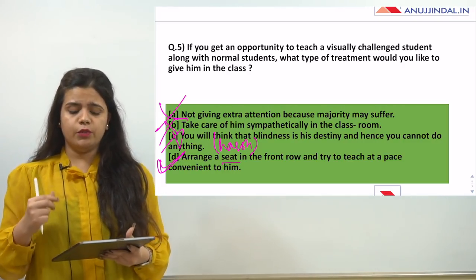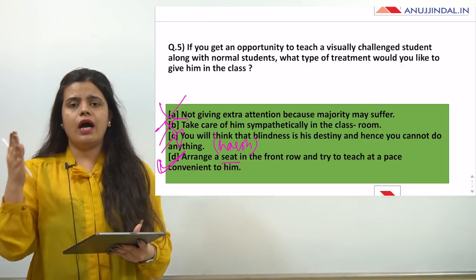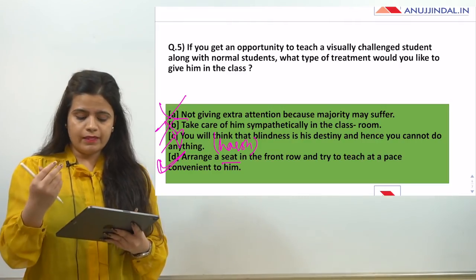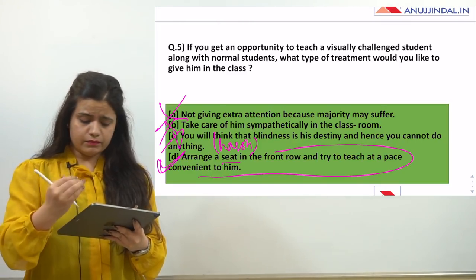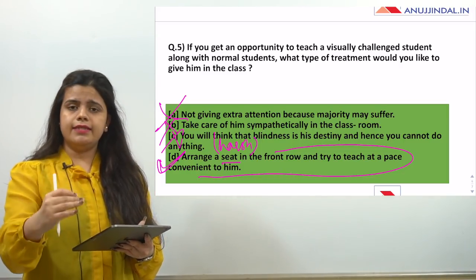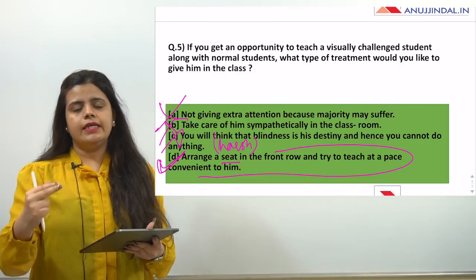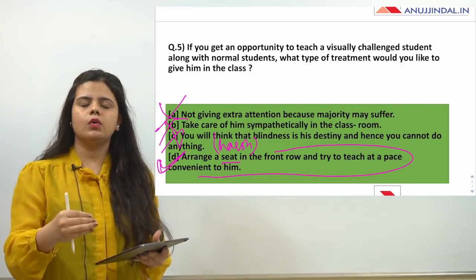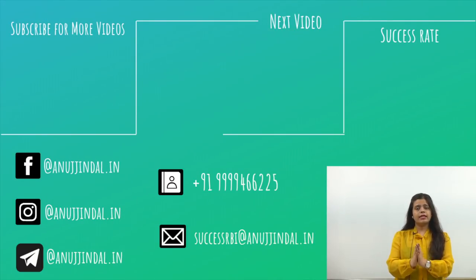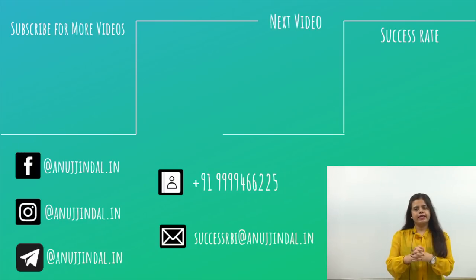Always look at the questions from a teacher's point of view — the answer should not look harsh or overly strict. The fourth option is most convenient: arrange a seat for the visually challenged student in the front row so the teacher can teach in a way that the student also understands. This was our sixth mock test on teaching aptitude. The next mock test will be on people and environment tomorrow. Thank you for watching — subscribe to the channel and press the bell icon.